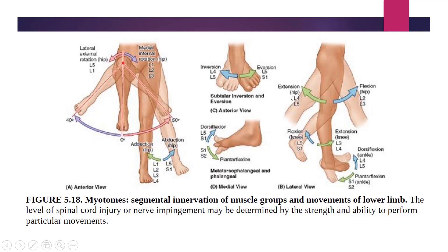Flexion at the hip joint is caused by muscles innervated by L2 and L3, while extension at the hip joint is innervated by L4 and L5. Extension of the knee joint is caused by muscles innervated by L3 and L4, and flexion of the knee — moving it backward — is caused by muscles innervated by L5 and S1.